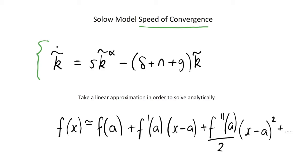In order to look at the speed of convergence, we're going to start with our equation of motion in the Solow model — this is just how our effective units of capital evolve over time. However, this is quite a complicated differential equation, so what we want to do is solve this analytically. We're going to take a linear approximation using the Taylor approximation, or Taylor expansion. The Taylor expansion basically says that we're going to approximate a linear line about some point.